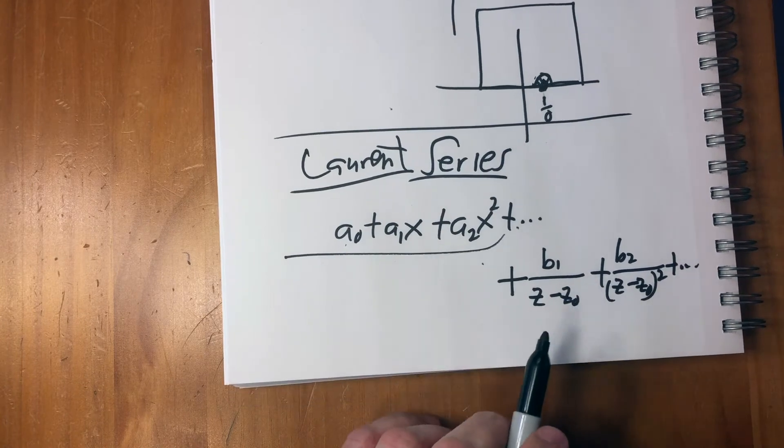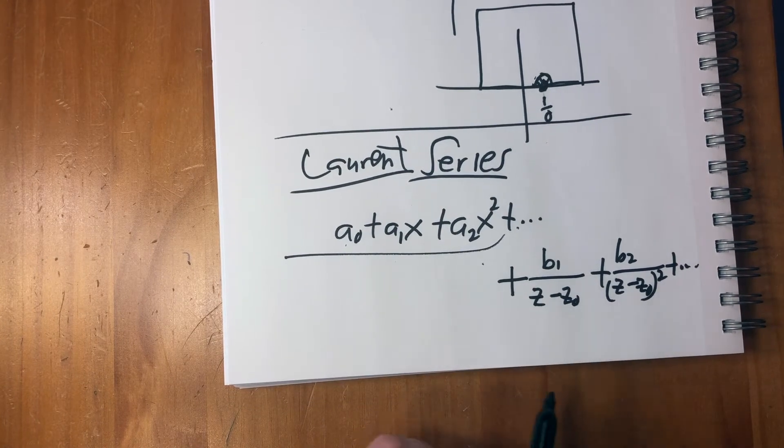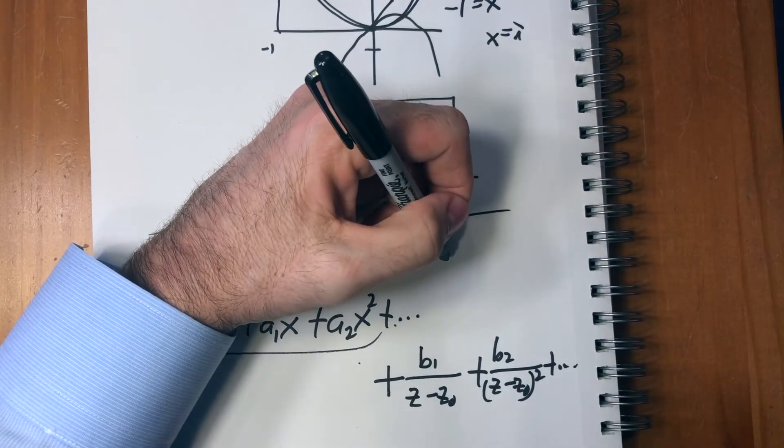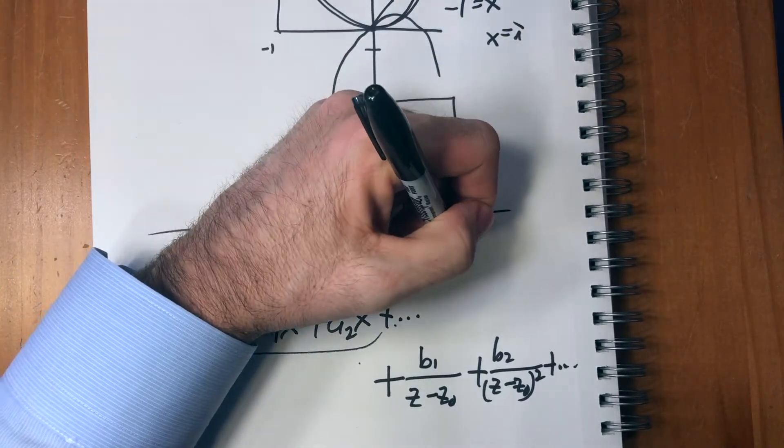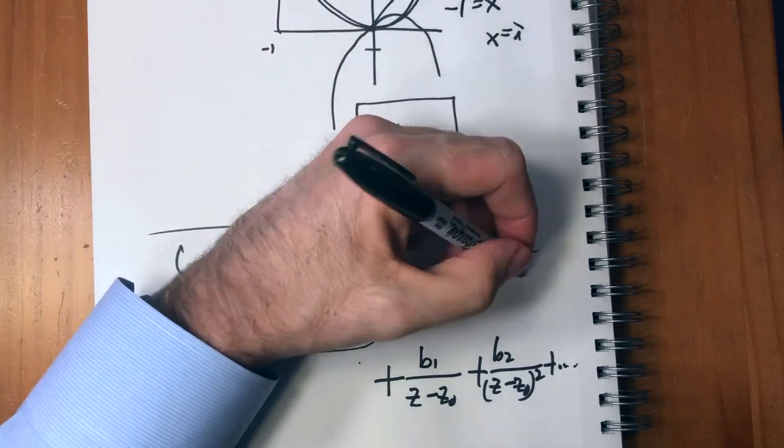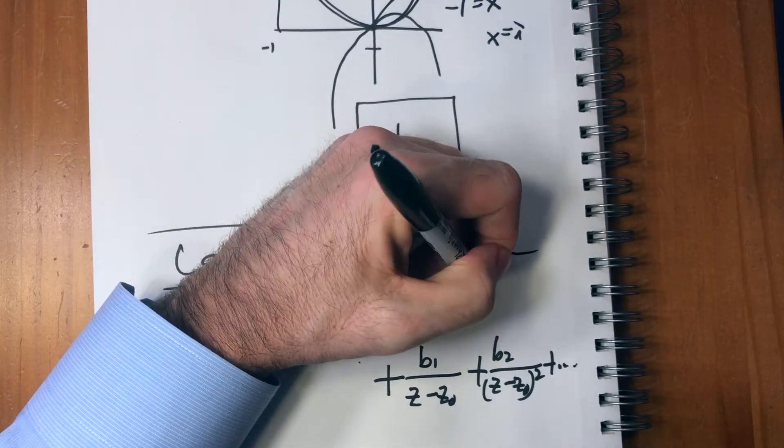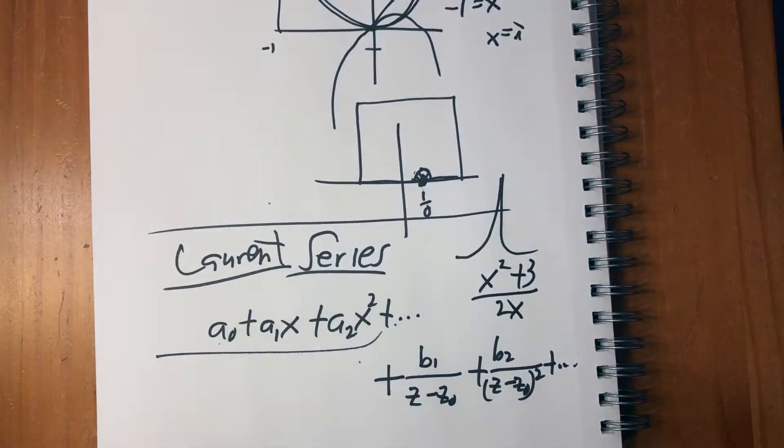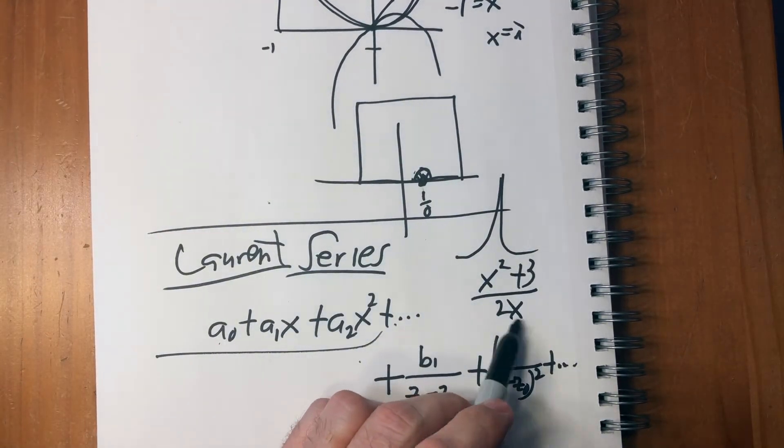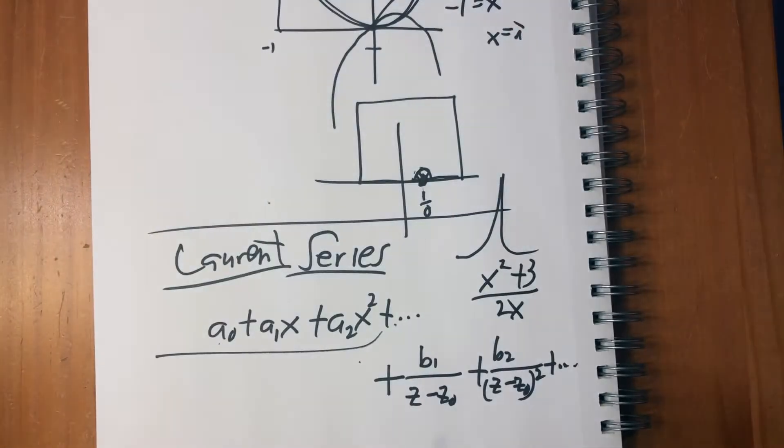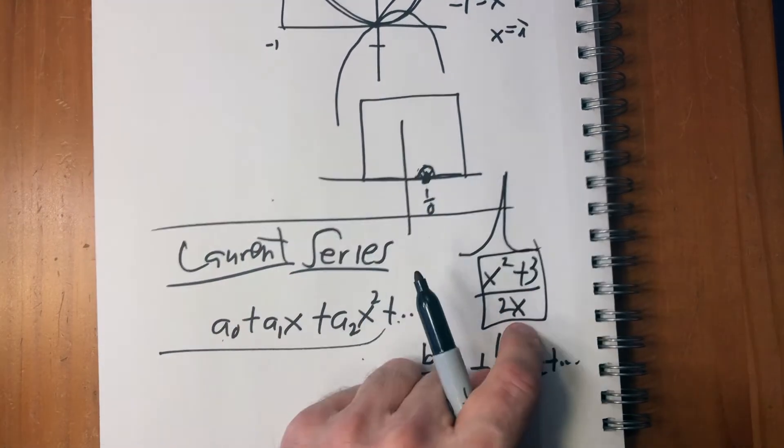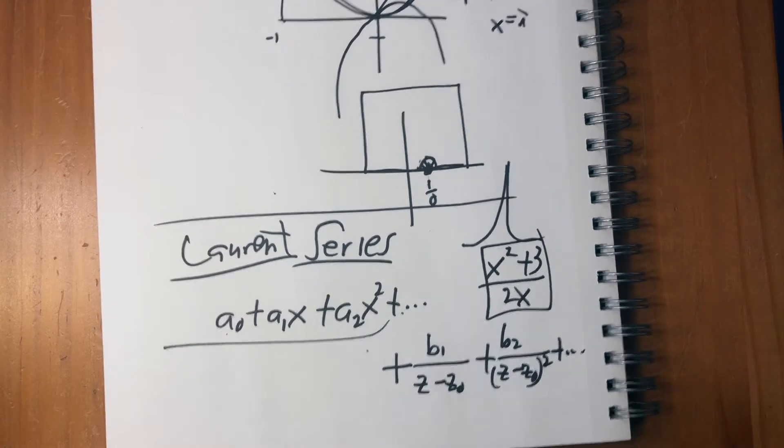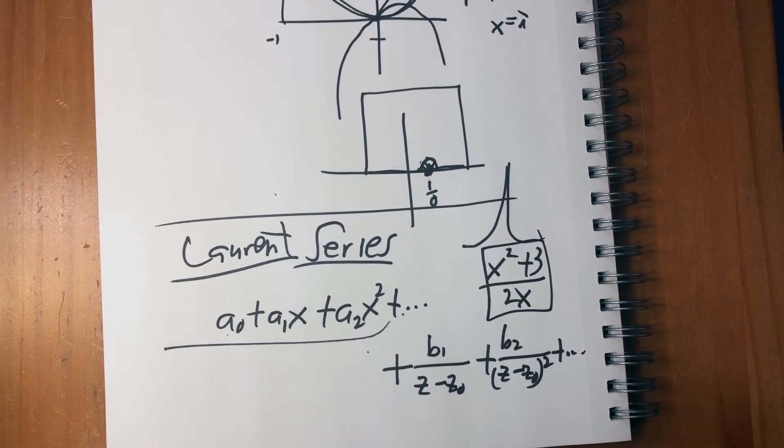And with Laurent series, now you can even express equations that have places where it goes to infinity. Like you can have, you know, X squared plus three over two X, for instance, that's going to have a place where it goes to infinity. You can now express that. You could not express this with a Taylor series because it's not smooth. You can express this with a Laurent series. So this adds a little power.